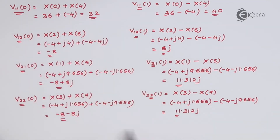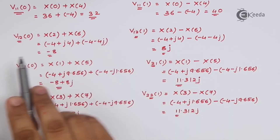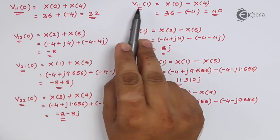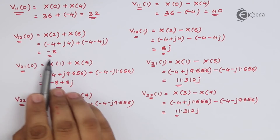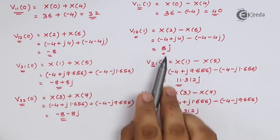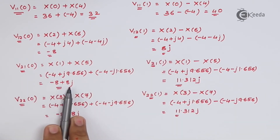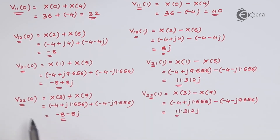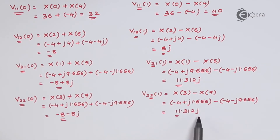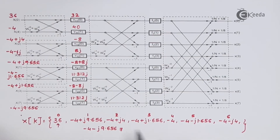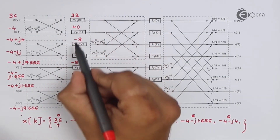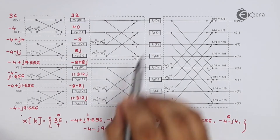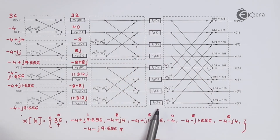These are all the values: v11[0] is 32, v11[1] is 40, v12[0] is minus 8, v12[1] is j8, v21[0] is minus 8 plus j8, v21[1] is j11.312, v22[0] is minus 8 minus j8, and v22[1] is j11.312. Now I will substitute all these values in the butterfly diagram. Having substituted the obtained values in the figure, we will now calculate f11[0] to f2[3].